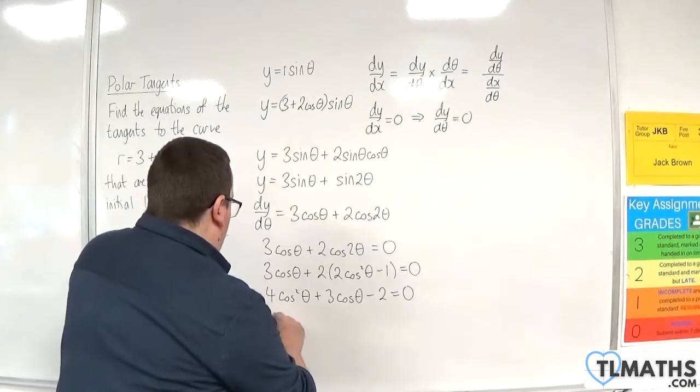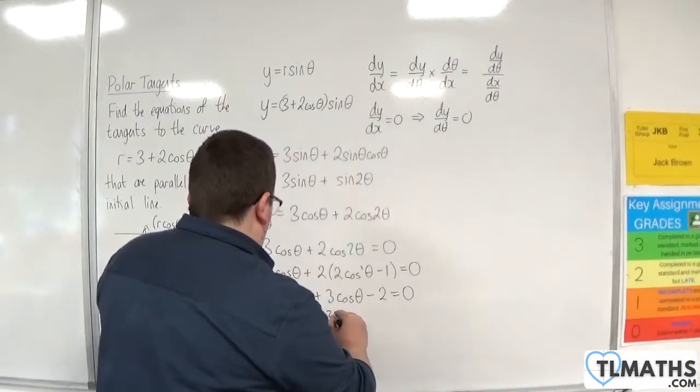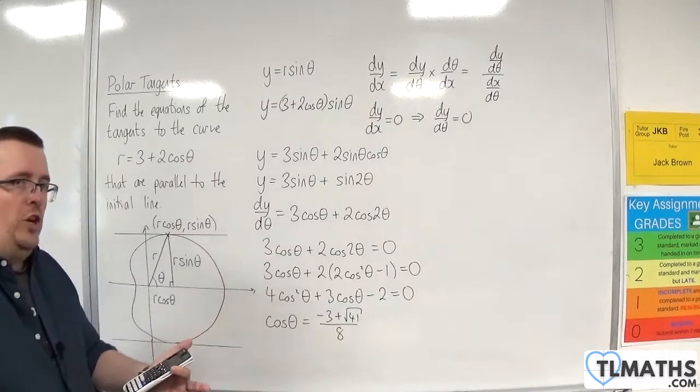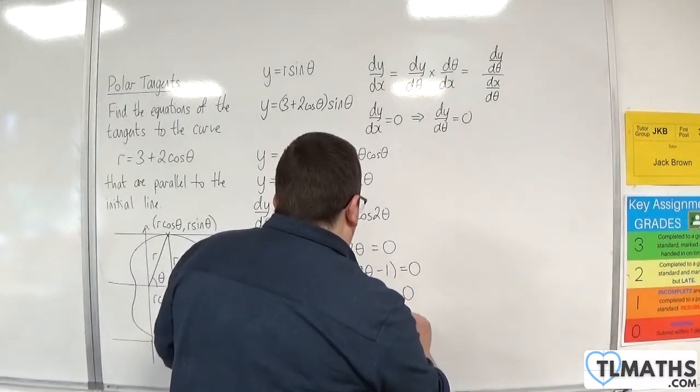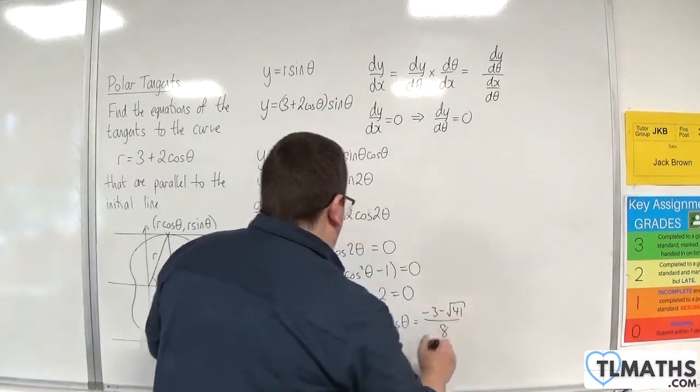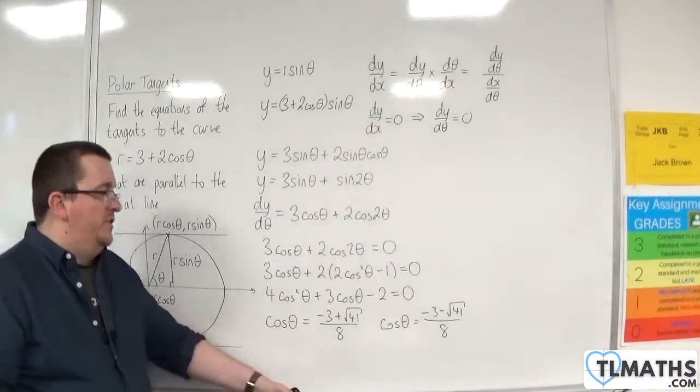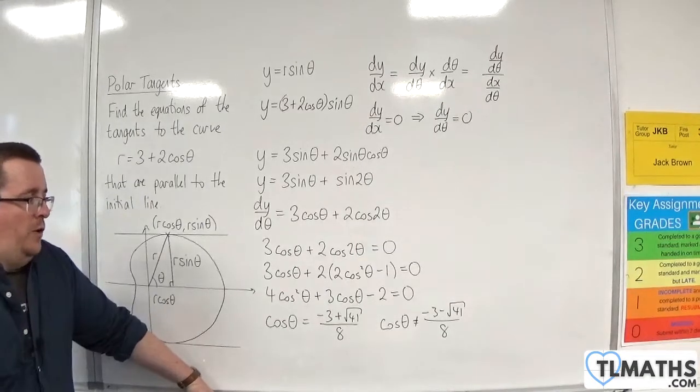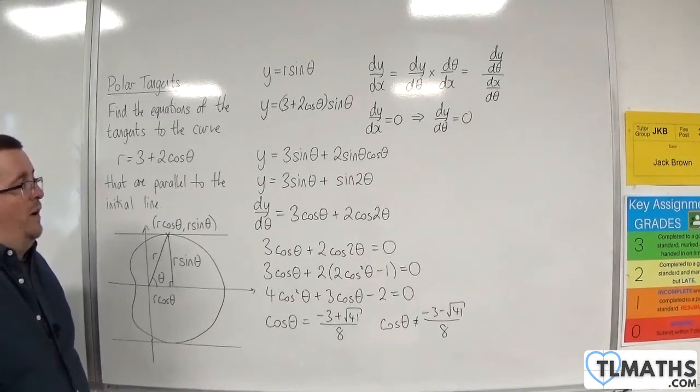And we get cosine theta is equal to minus 3 plus root 41 over 8. So, I'm just going to press the SD button just to check if it's between minus 1 and 1, which it is. So, that's fine. Or, we've got cosine theta is minus 3 take away root 41 over 8, which is minus 1.17. So, that is beyond what we can work with. So, we can't have that one. So, we're only interested in cosine theta is minus 3 plus root 41 over 8.